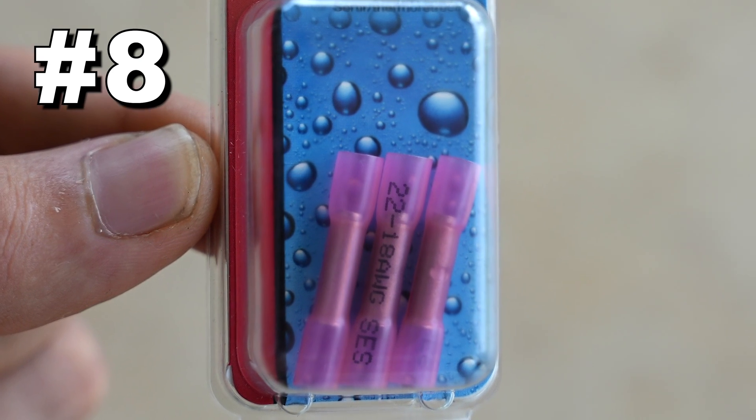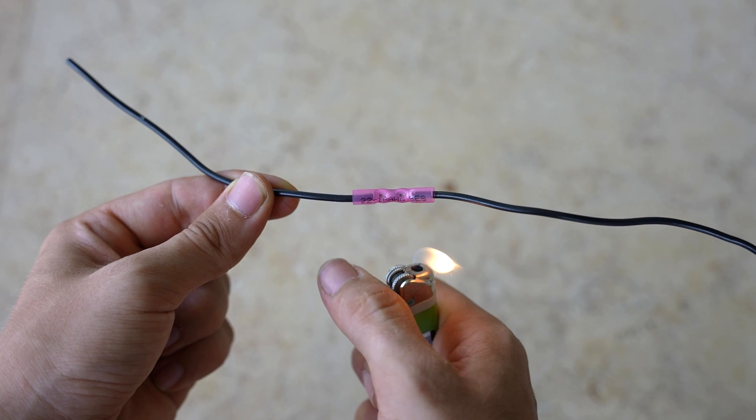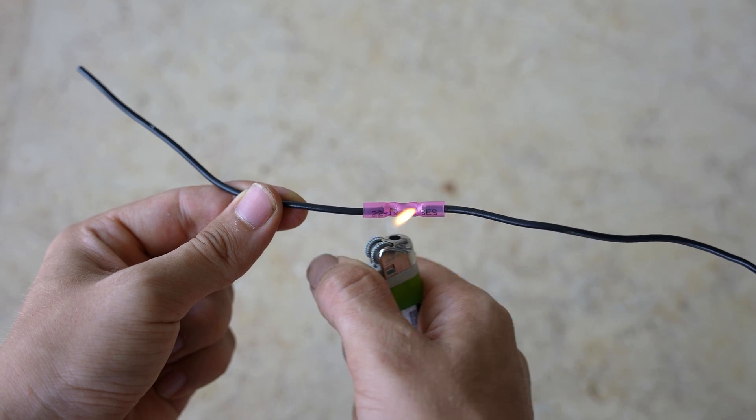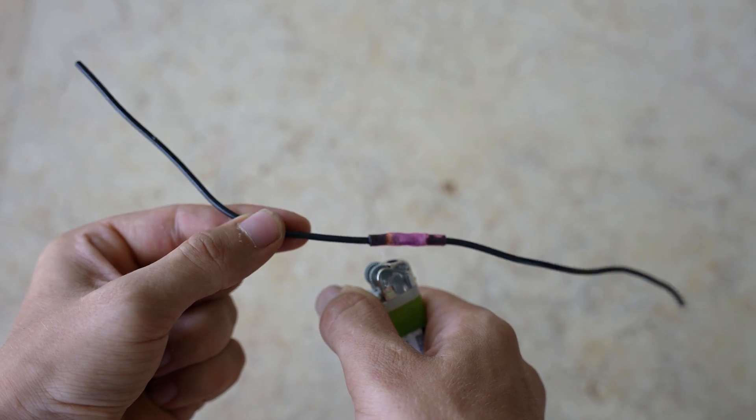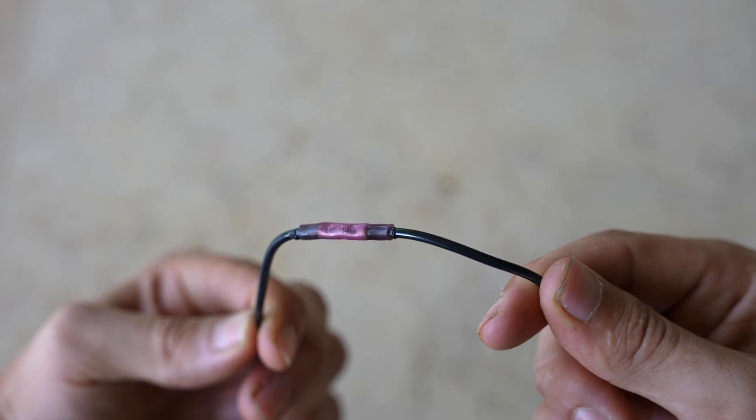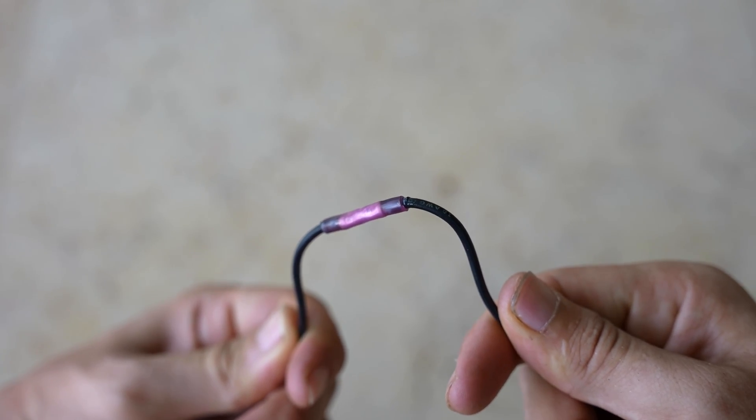Method eight is waterproof butt connectors. These are like normal butt connectors, but they shrink when heated up, giving the final connection a nice waterproof seal. I think I may have roasted mine a bit too much, but it's probably passable. What do you think?